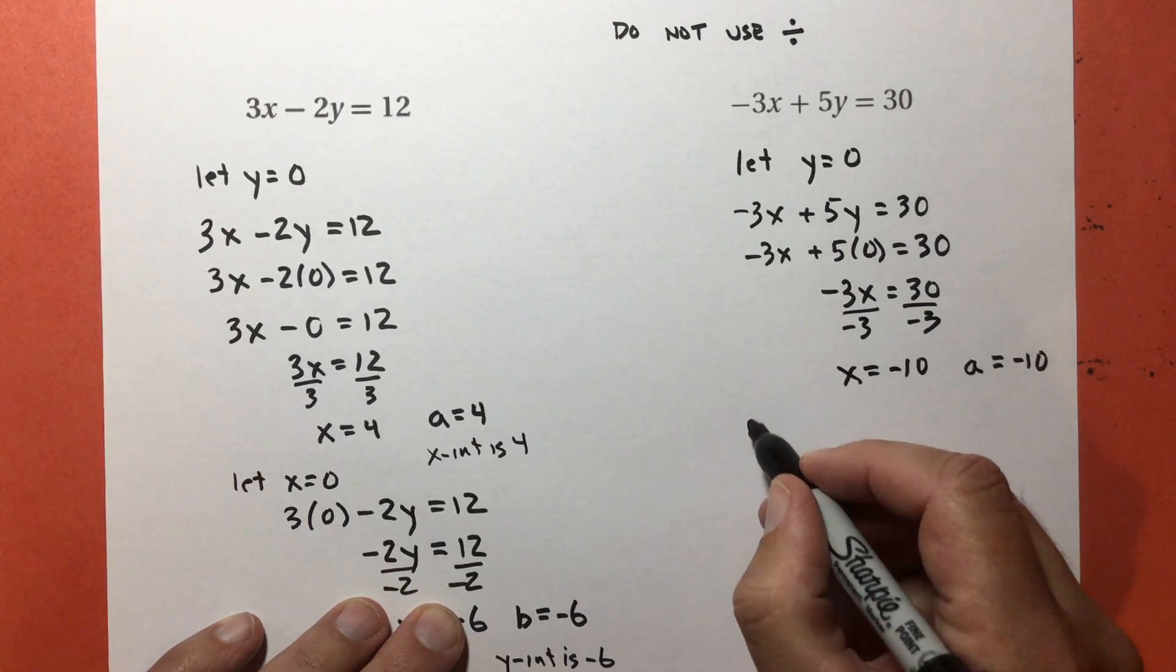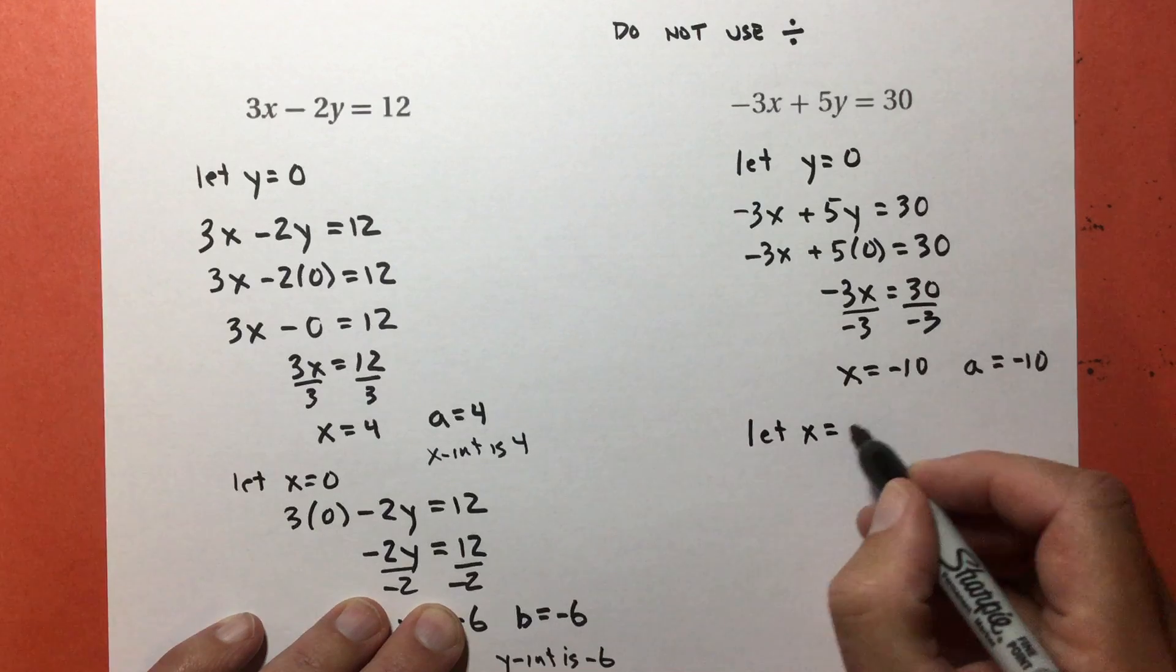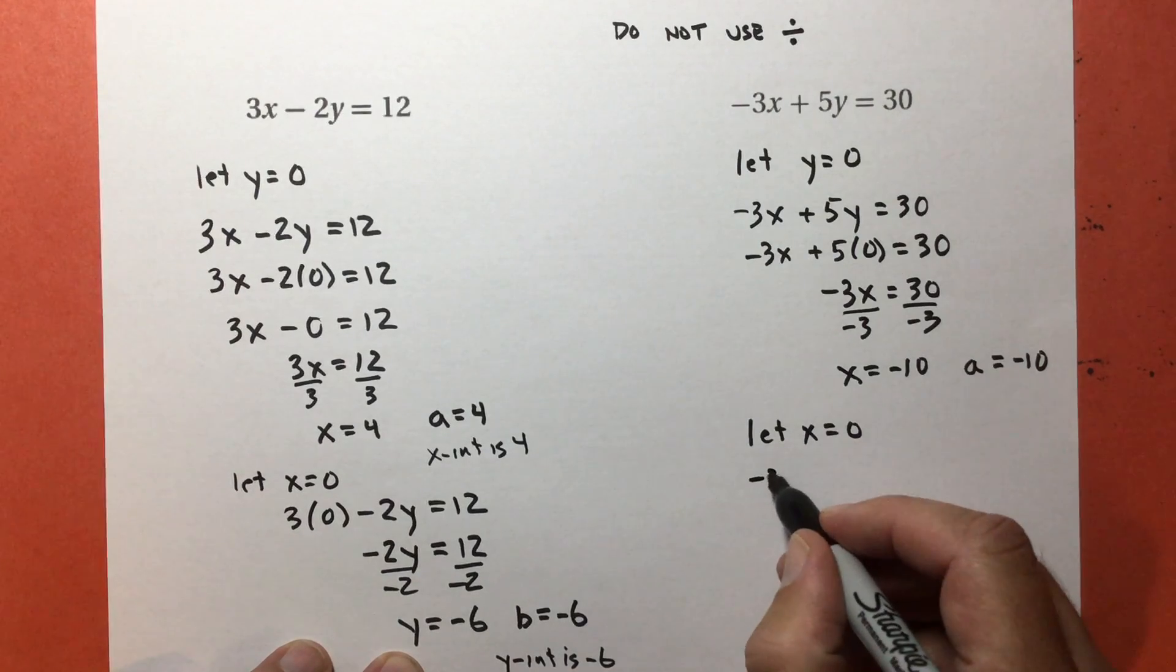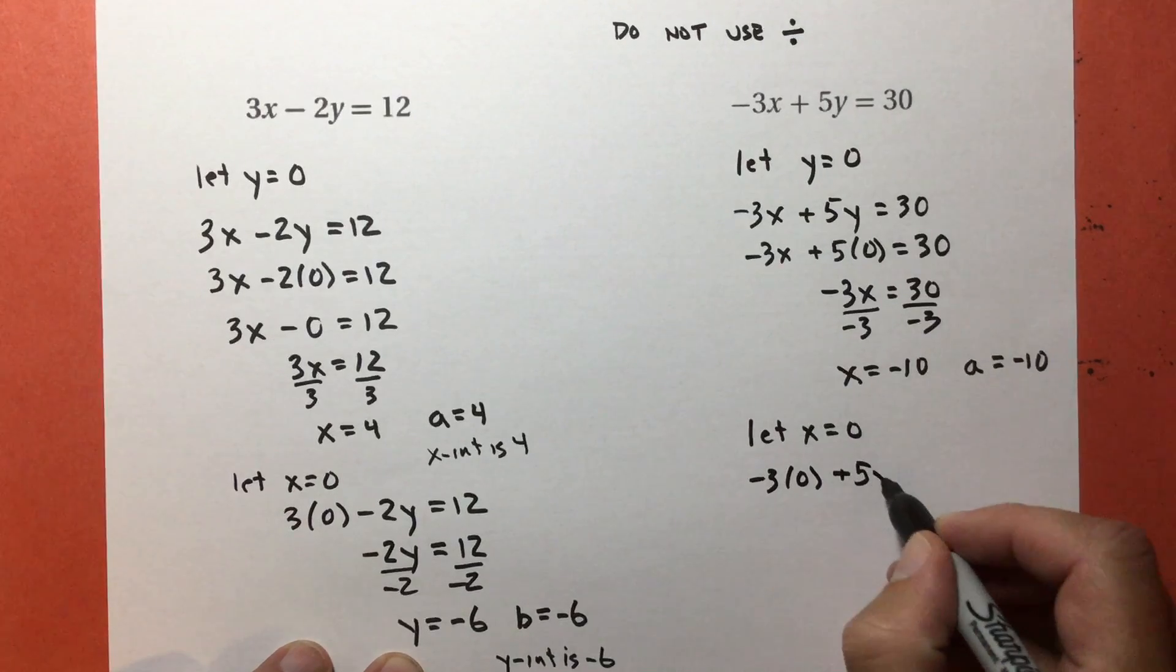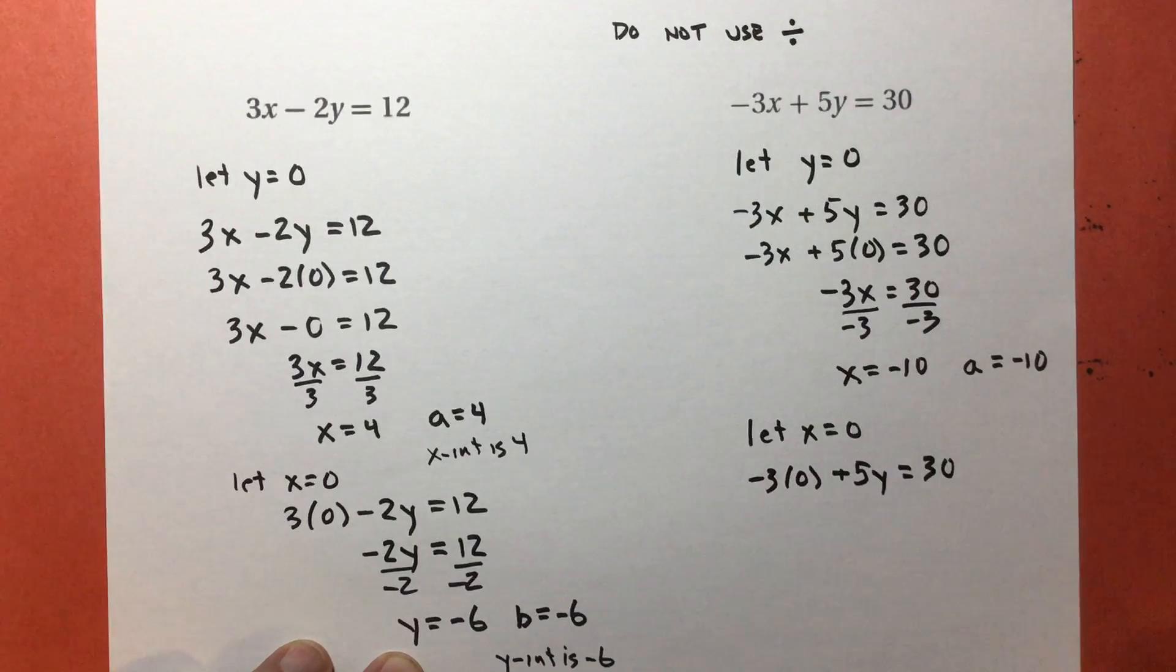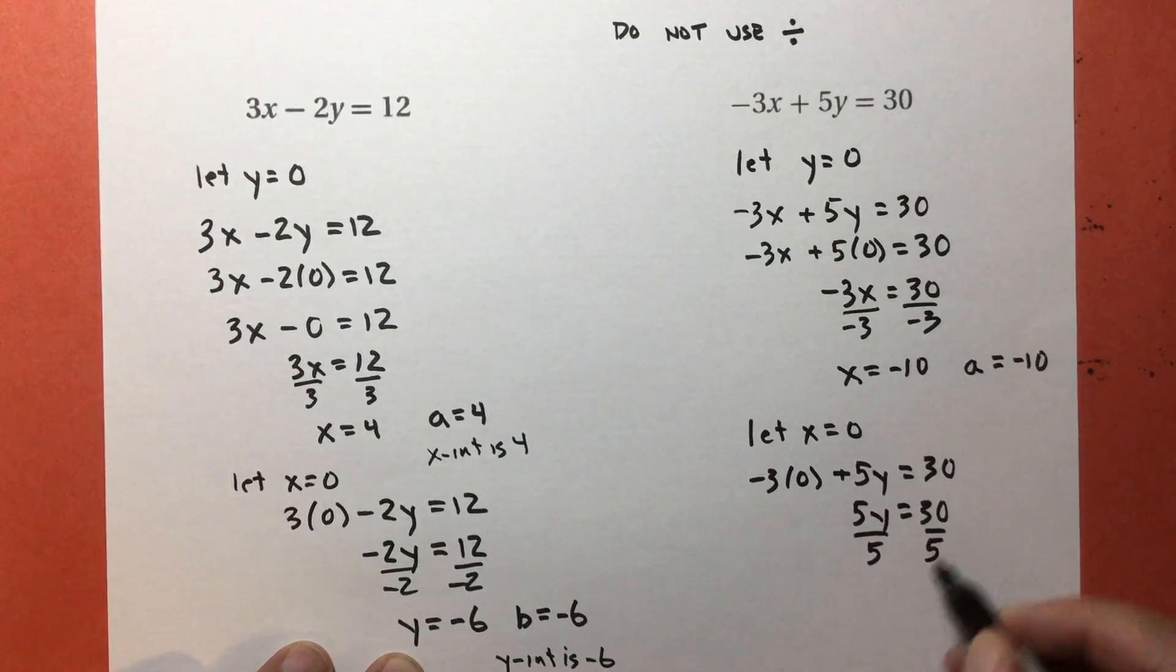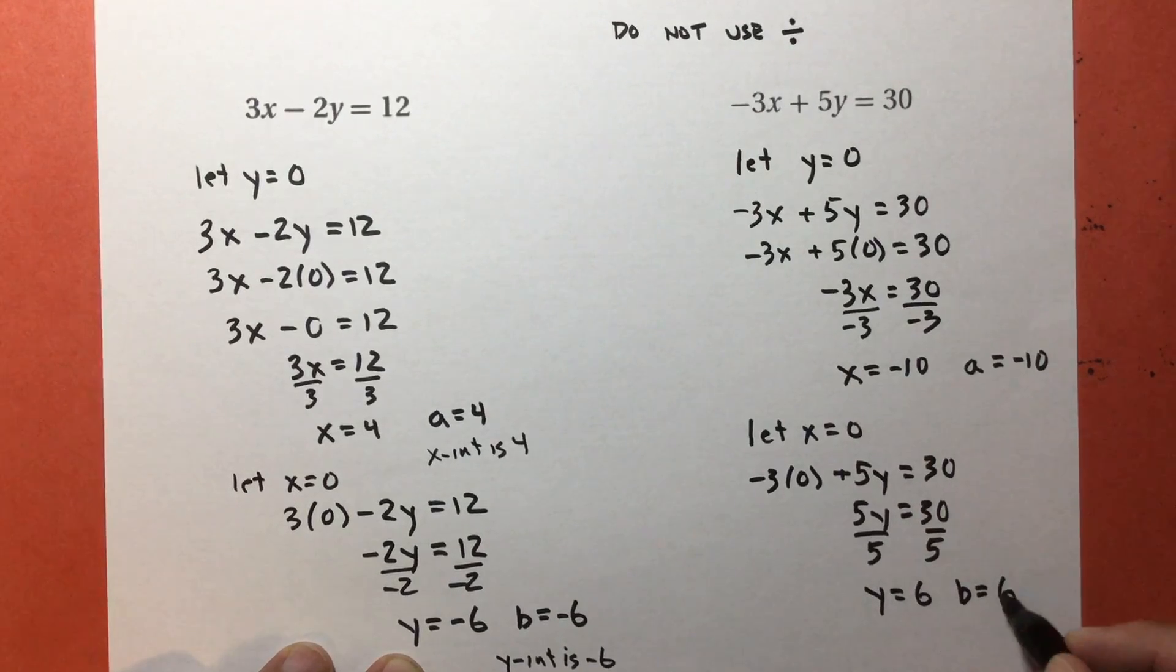To get the y-intercept, I'm going to let x equal 0. So to find the x, y equals 0. To find the y, x equals 0. It's where it crosses the x and y-axis and the other one equals 0. I get negative 3 times 0 plus 5y equals 30. 5y equals 30. Divide by 5 and I get y equals 6. So my y-intercept is 6.